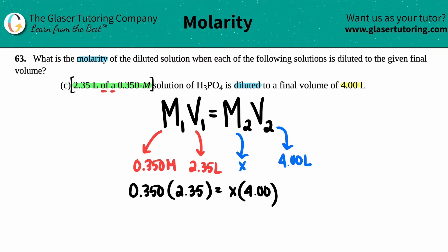And now all we got to do is just solve for x. Let's divide by 4.0 on both sides. Okay, calc is out. Let's see what we get. 0.350 times 2.35 divided by 4.